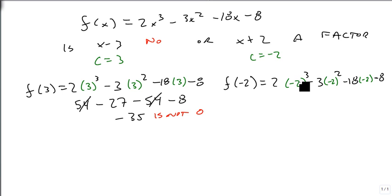2 times negative 2 cubed minus 3 times negative 2 squared minus 18 times negative 2 minus 8. So negative 2 cubed is negative 8, that's minus 16. Negative 2 squared is 4, that's minus 12. Plus 36 minus 8. If I combine all these up, I get minus 36 plus 36, which is 0. So sure enough, this is a factor.